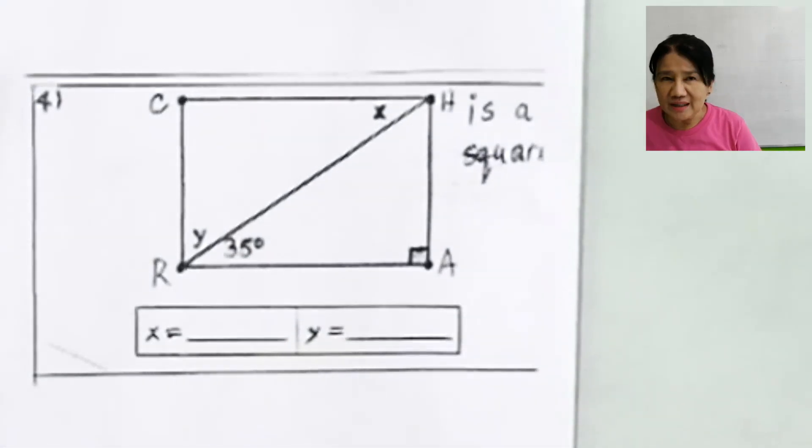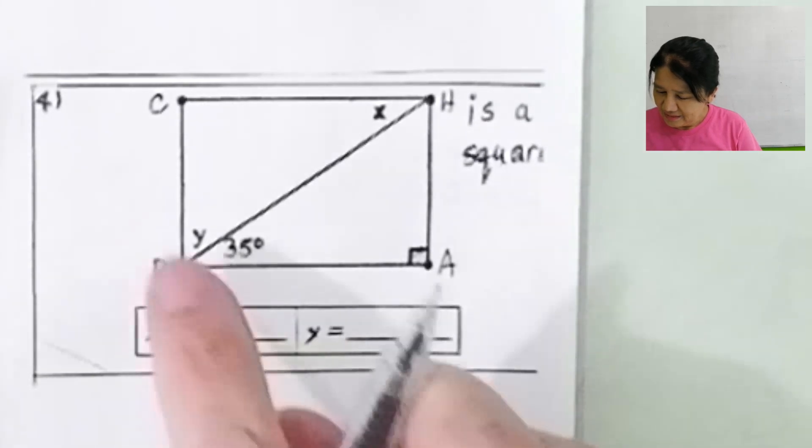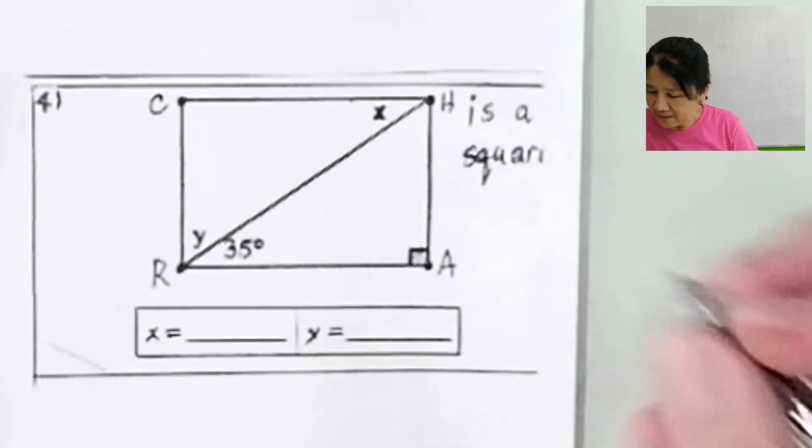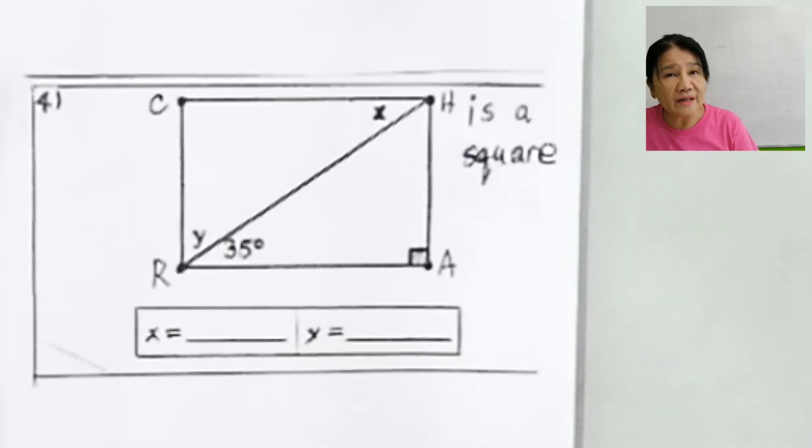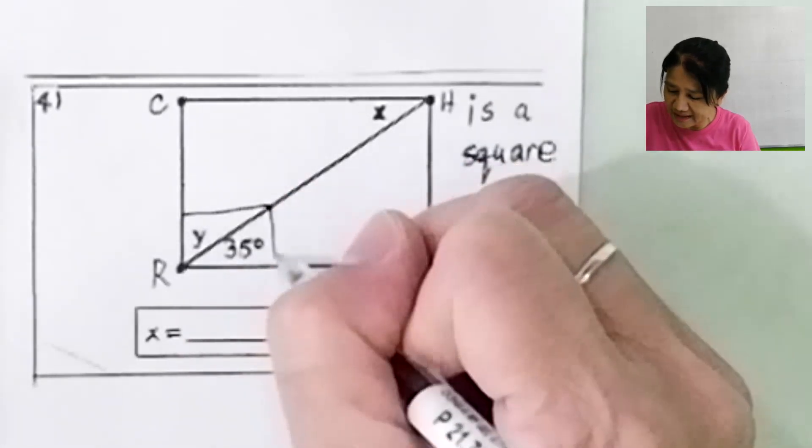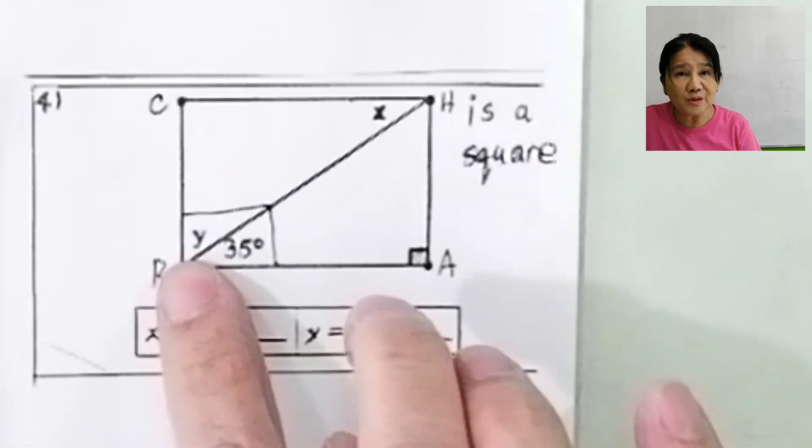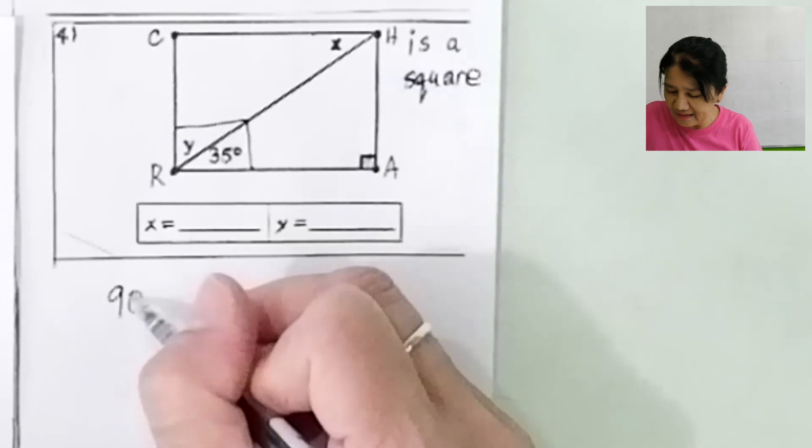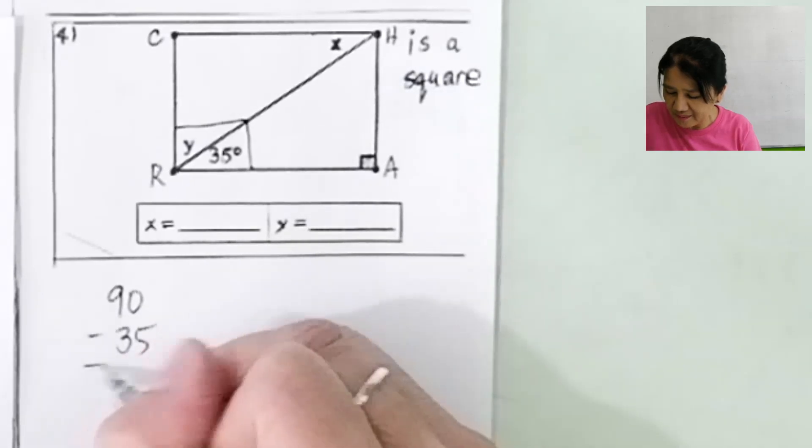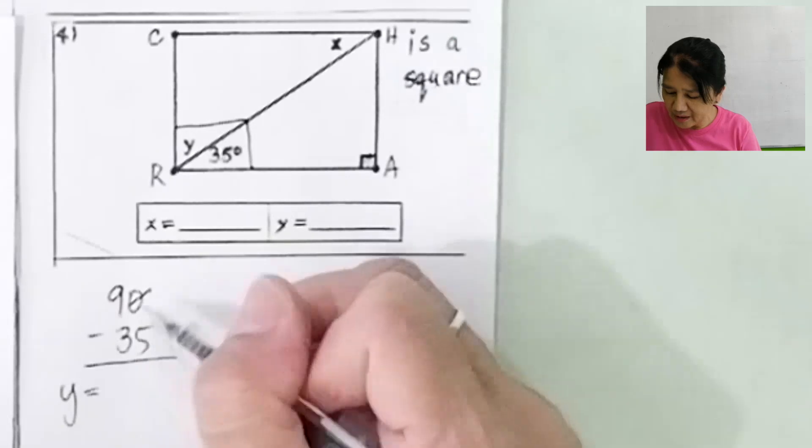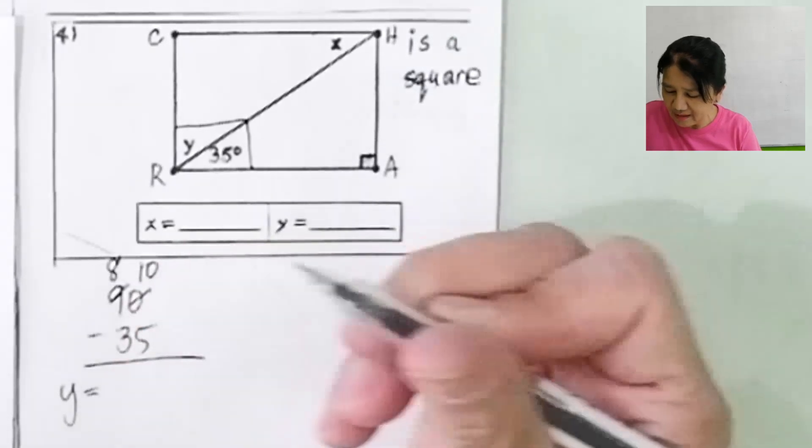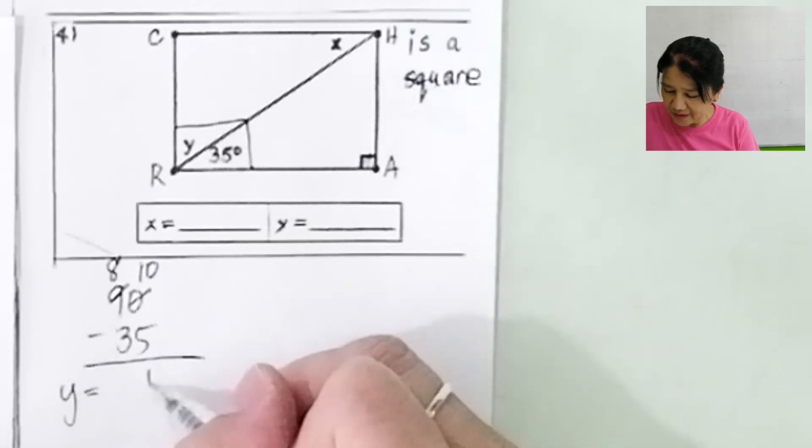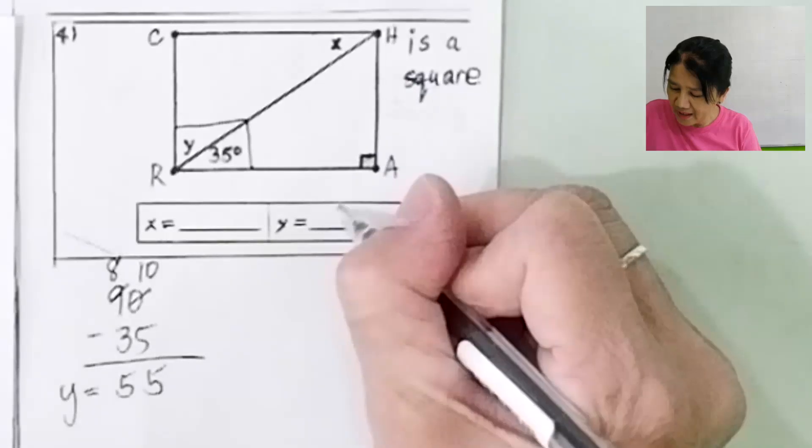Problem number 4. Char is a square. So if it is a square, all the angles of a square are 90 degrees or right angle. So this must be 90. So very simple. For you to get y, you solve for 90 minus 35. 10 minus 5 is 5, 8 minus 3 is 5. So y is 55.